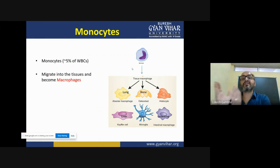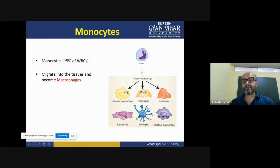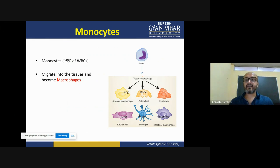Monocytes are the precursor of macrophages, and macrophages are the first line of defense of immediate immunity. Specifically, macrophages are also responsible for presenting the antigen to activate cell-mediated immunity — that's why they are called antigen presenting cells (APCs). Depending on the tissue, the macrophage gets a different name: in the liver they are called Kupffer cells, in the lungs alveolar macrophages, and in the intestine intestinal macrophages.